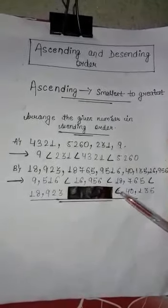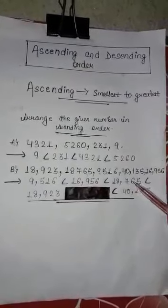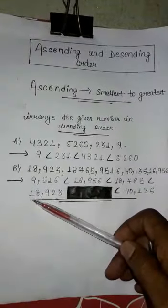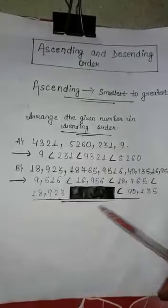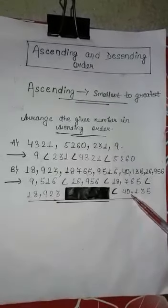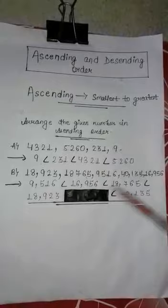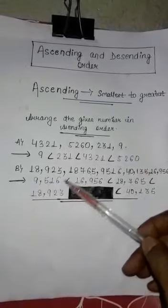And the next greater is 18,765. The next greater number is 18,923. And the last one is 40,135. So we will write in this way. This is the symbol.